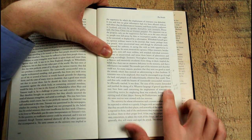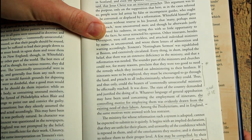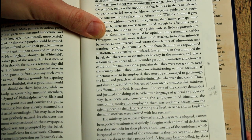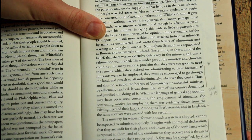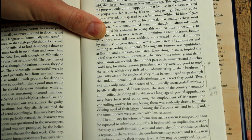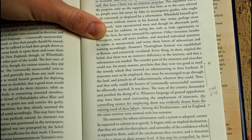He writes, if itinerants were to be employed, they must be encouraged to go through the land and preach to all indiscriminately wherever they could. Thus and thus only could the hearers of contentedly unsuccessful ministers be effectually reached. It was done. The state of the country demanded and justified the doing of it.